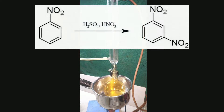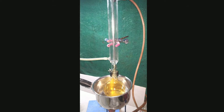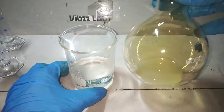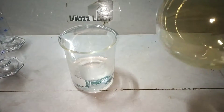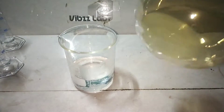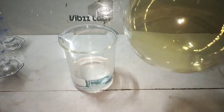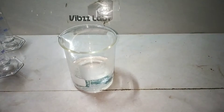What is happening here is nitrobenzene gets nitrated in the meta position, forming 1,3-dinitrobenzene or metadinitrobenzene. It's actually a solid product, and it is now remaining as liquid in this mixture.